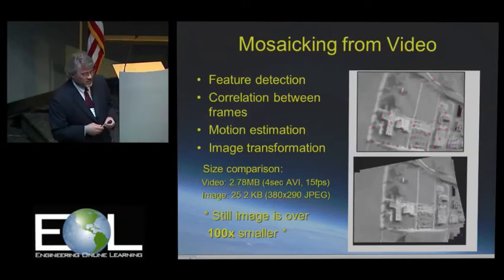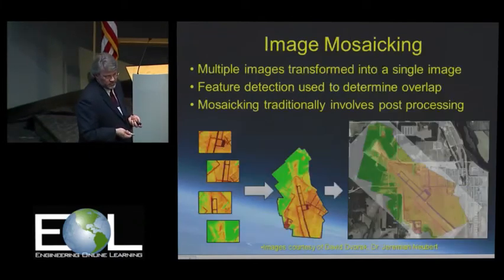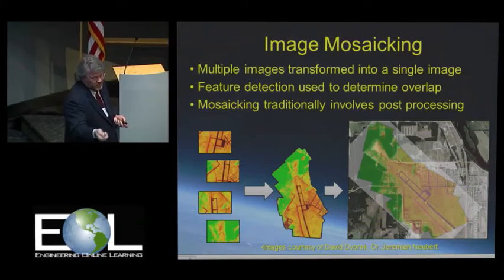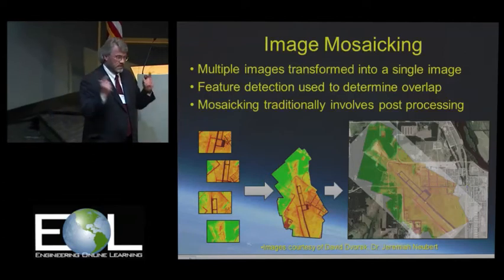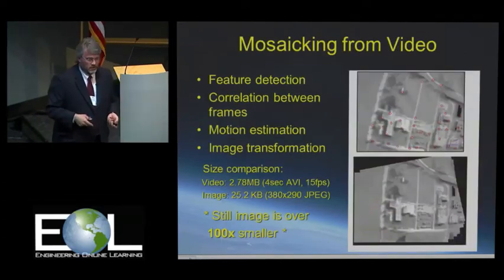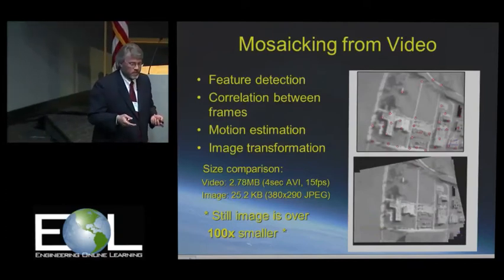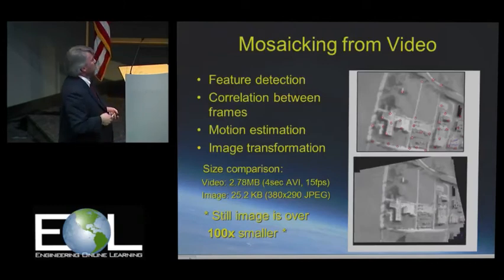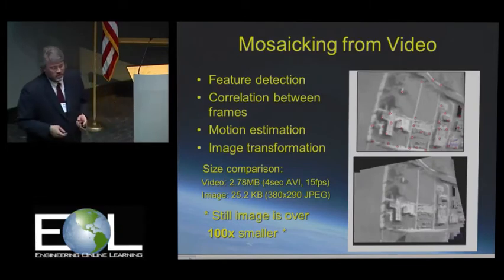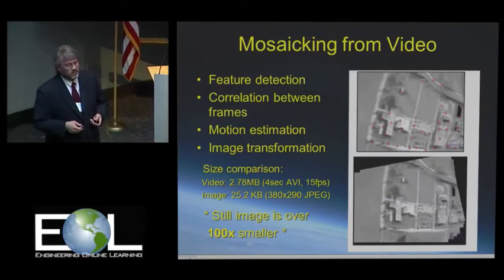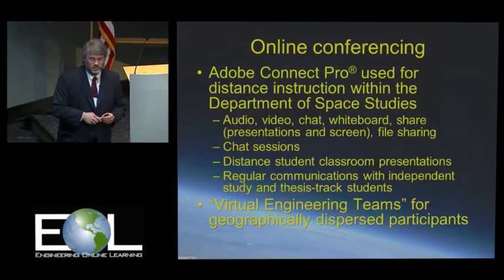The benefit of this is as follows. Mosaicing traditionally involves post-processing — you gather images, send them to the ground, and stitch them together on the ground. But if you can do this in the air, you can save bandwidth. Instead of sending, say, video down to the ground — maybe three megabytes of video — instead you send a single image, which is a couple orders of magnitude smaller, about one one-hundredth the size. So you can imagine the obvious benefits for that.